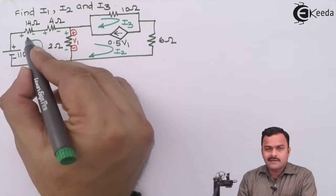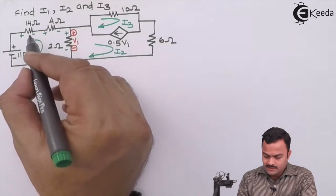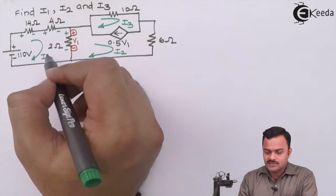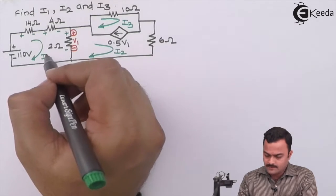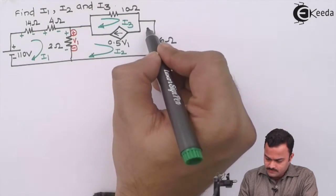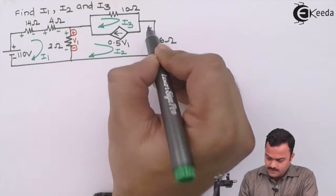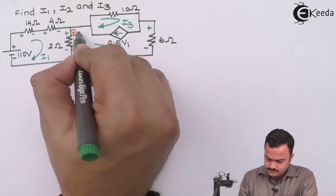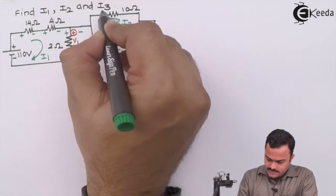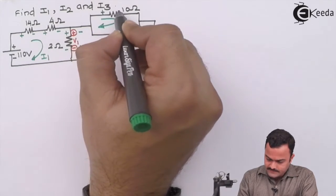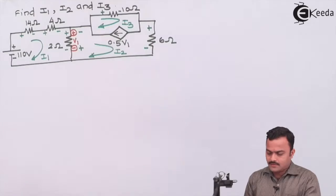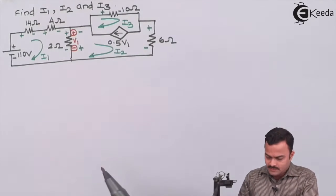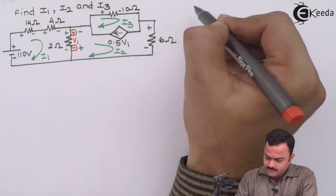With green ink I have marked all the voltages across the resistors due to current i1. Similarly, i2 will have voltages marked in the same manner, and the same applies for i3. We have now marked all the voltages. Let's apply KVL to mesh 1.